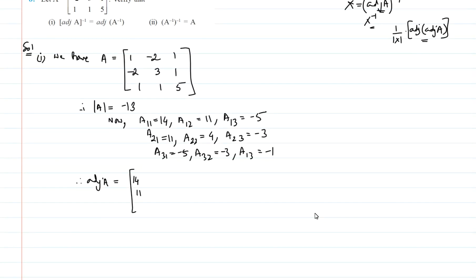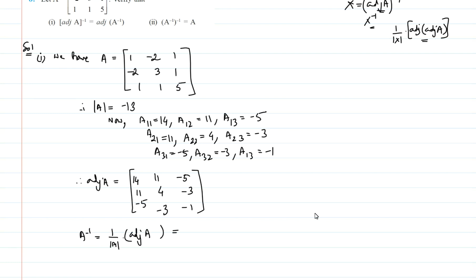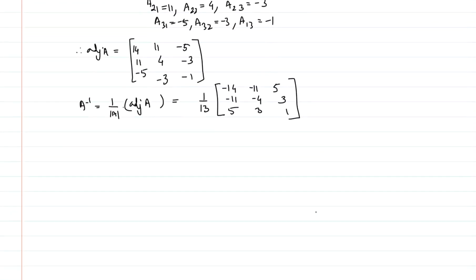Adjoint of A is the transpose of the cofactor matrix, which gives me: 14, 11, minus 5, 11, 4, minus 3, minus 5, minus 3, and minus 1. So A inverse is equal to 1 by the determinant of A times adjoint of A, and inserting the minus directly, I get minus 1 by 13 times the matrix, giving minus 14, minus 11, 5. This is my A inverse.